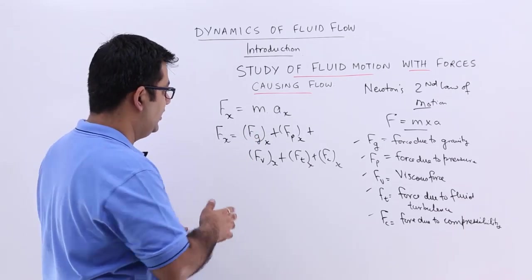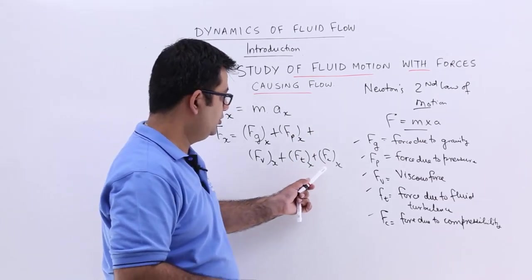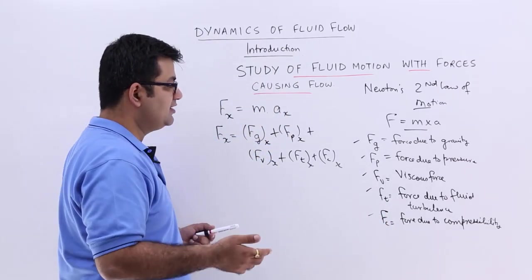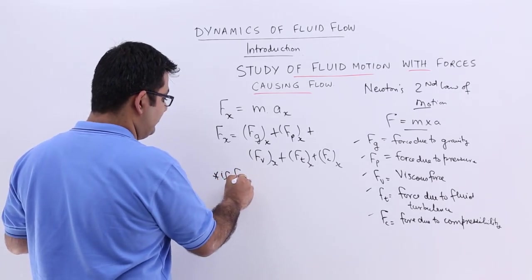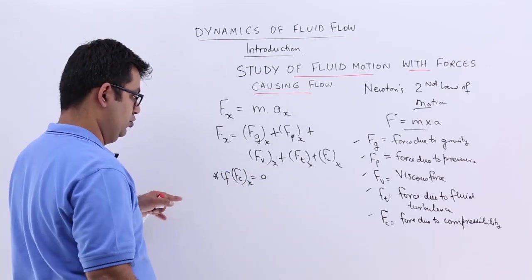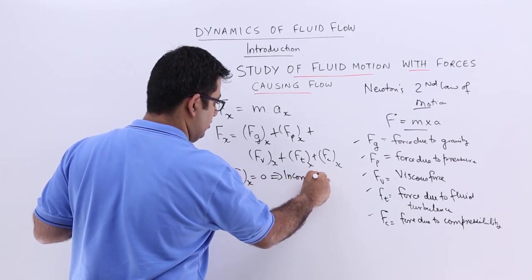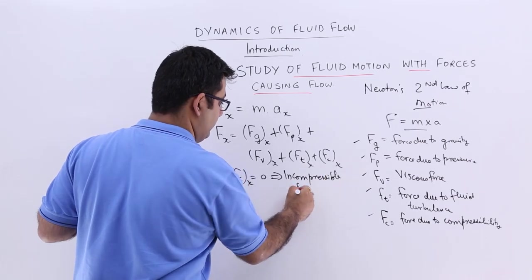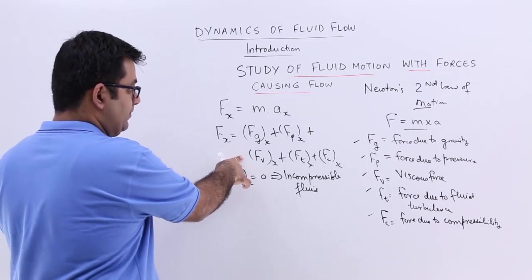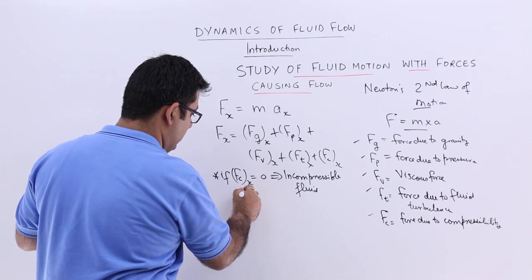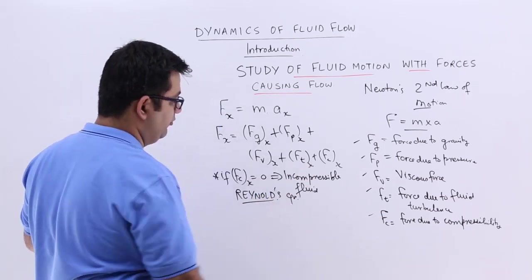So this is the total force equation. If I assume that my force due to compressibility is zero — that is, my fluid is incompressible — so if Fc in the x direction is zero or negligible, this means incompressible flow. When you put Fc equal to zero in this equation, the equation is called the Reynolds equation of fluid motion.